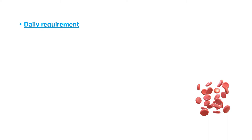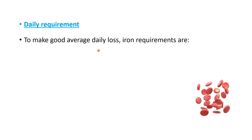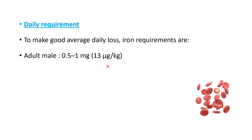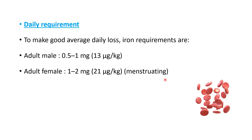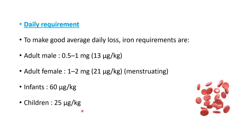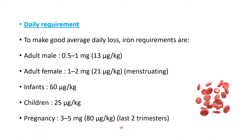The daily requirement of iron: adult males require 0.5 to 1 mg (around 13 mcg/kg); menstruating adult females require 1 to 2 mg (around 21 mcg/kg); infants require 60 mcg/kg; children require 25 mcg/kg; and during pregnancy, especially in the second and third trimesters, 3 to 5 mg (80 mcg/kg) of iron is required.